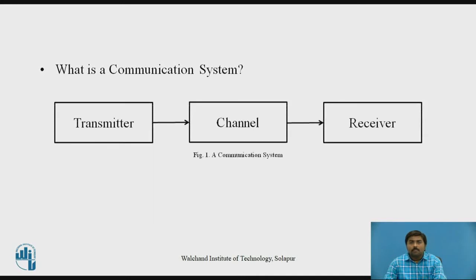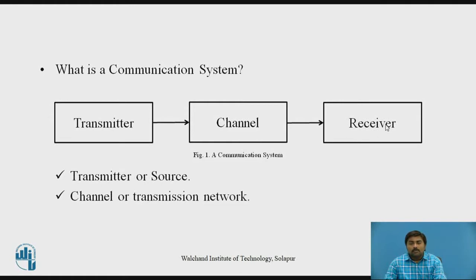A communication system is nothing but a transmitter, a channel, and a receiver. The transmitter is the source of information, which generates information that is communicated to a receiver through a channel. The receiver is the destination of the information, which receives the information coming from the channel.